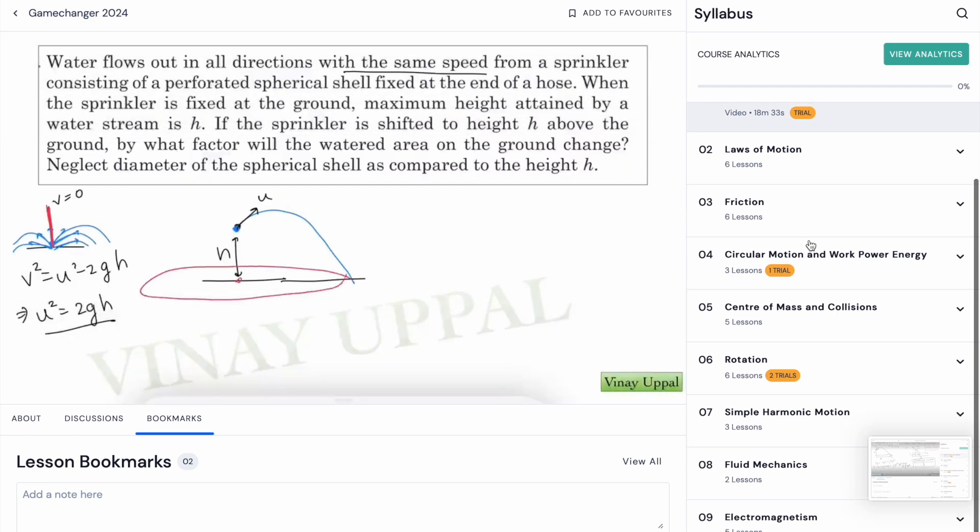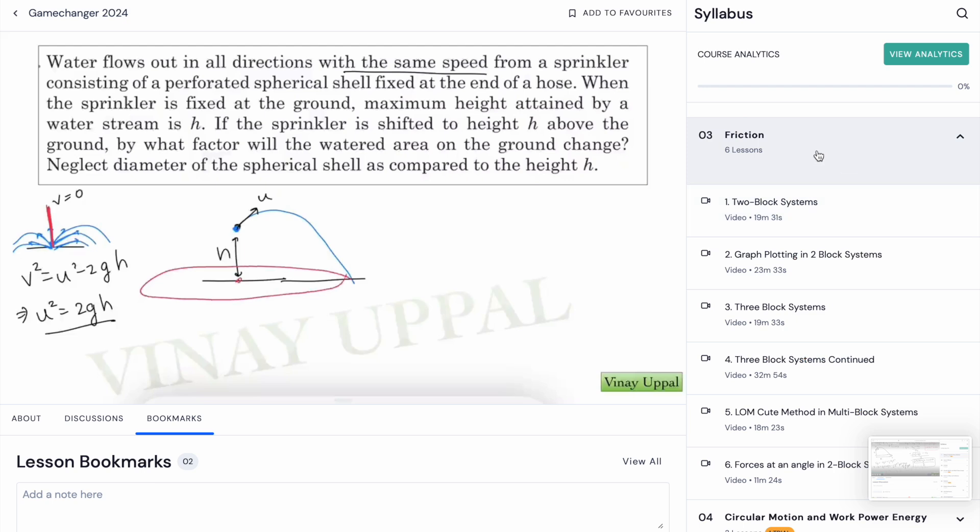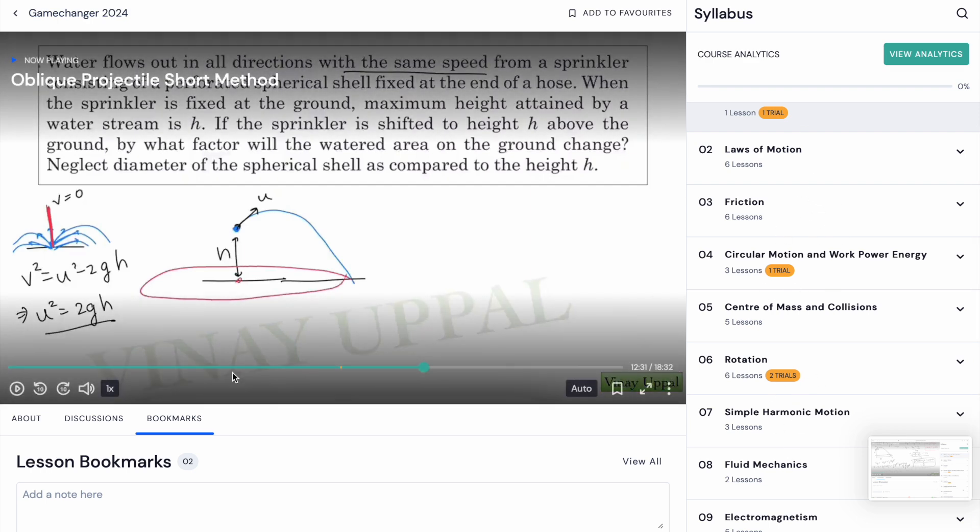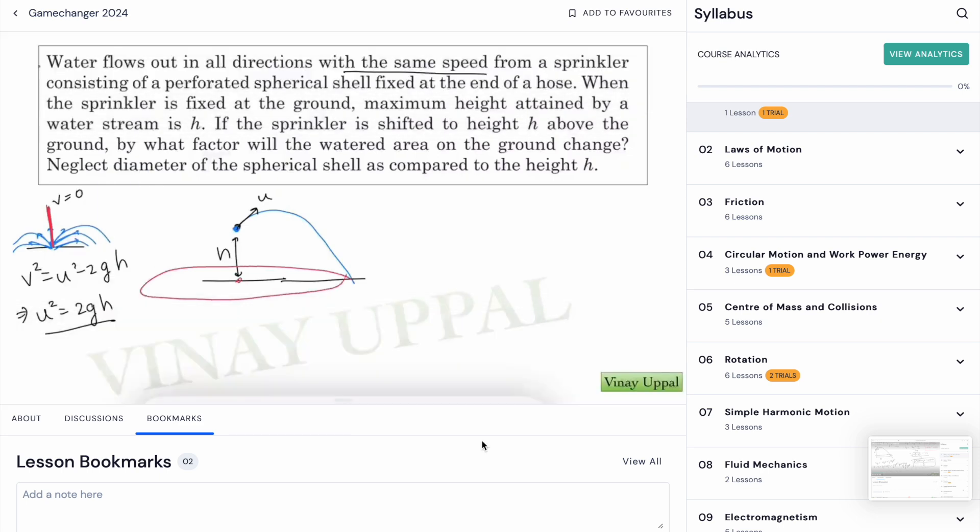On the right hand side you can see all the chapters along with the subtopics. If you just click on Friction you'll see all the subtopics inside Friction and the same for the rest of the chapters. There are some video settings where, for example, you can just change the speed here. You can select or speed up or slow down the video if you find me too fast or too slow according to your convenience.